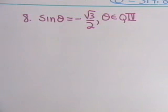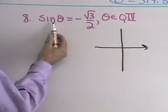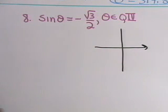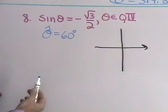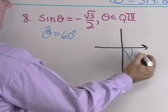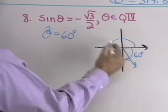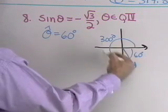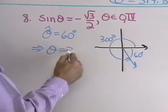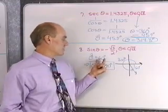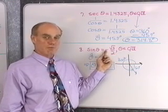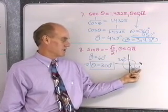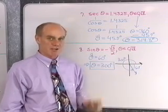Next problem: sine theta equals negative square root 3 over 2, and theta belongs to quadrant four. We can do this without a calculator. The numerical part, square root 3 over 2, tells us the reference angle is 60 degrees, since sine of 60 degrees equals square root 3 over 2. Since theta terminates in quadrant four, draw a reference angle of 60 degrees in quadrant four. That corresponds to 360 minus 60 equals 300 degrees, so theta equals 300 degrees.